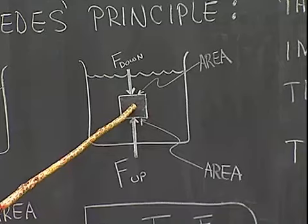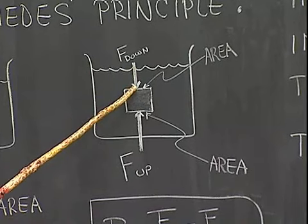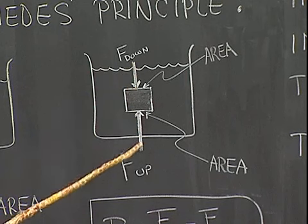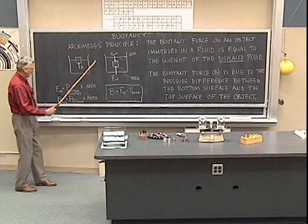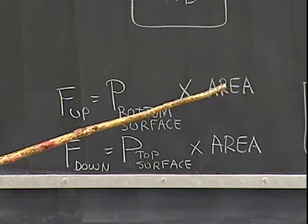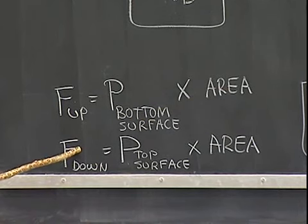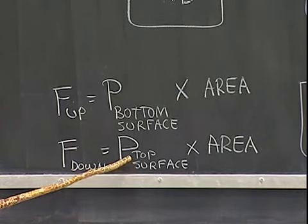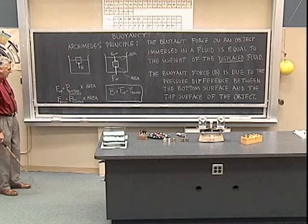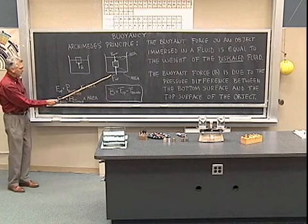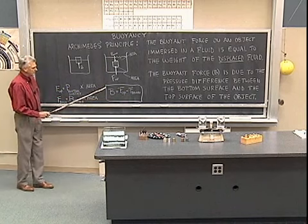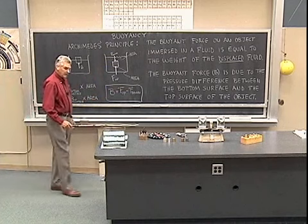Over here we have an object that's totally immersed. This object has pressure on top as well as pressure on the bottom. The downward force is due to pressure on the top surface, and the upward force is due to pressure from below. The force pushing up on the bottom equals the pressure on the bottom surface multiplied by the area of the bottom surface. The force pushing down on top equals the pressure on the top surface multiplied by the area of the top surface. So the buoyant force is the net difference — F up minus F down — again due to the pressure difference between the bottom and the top surface.